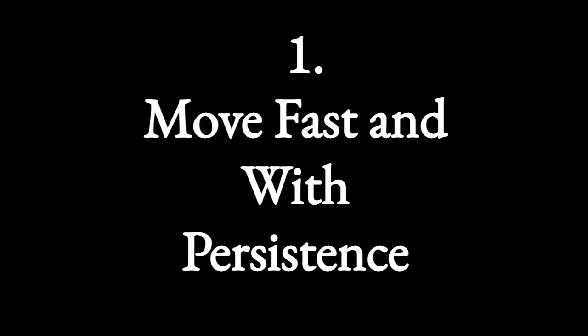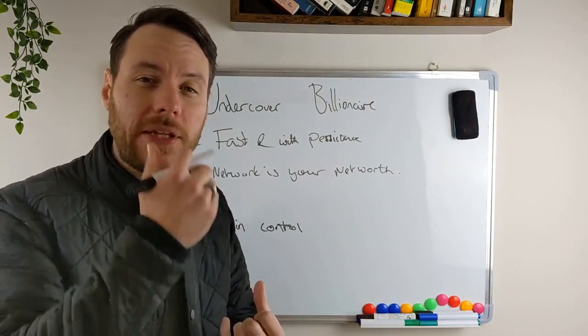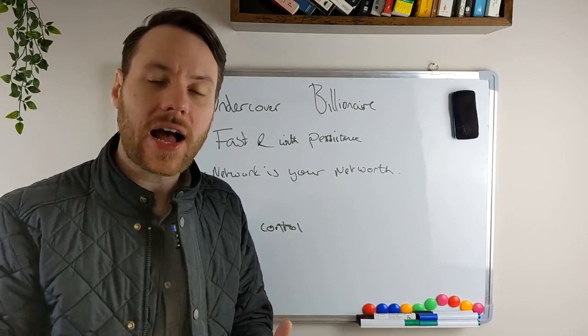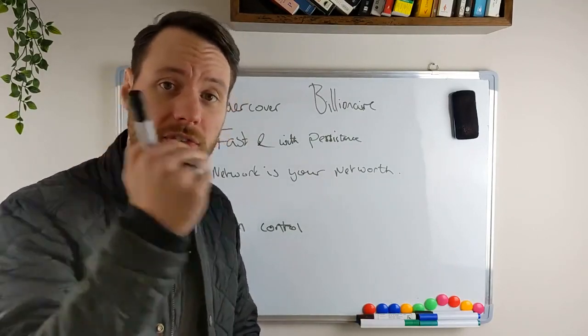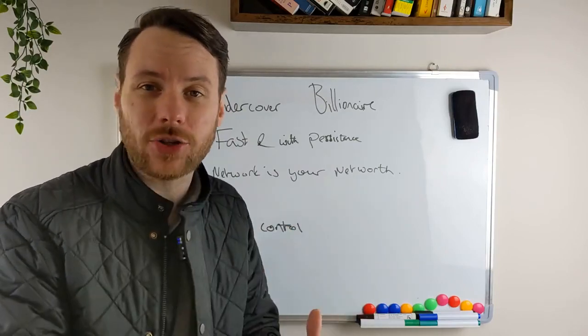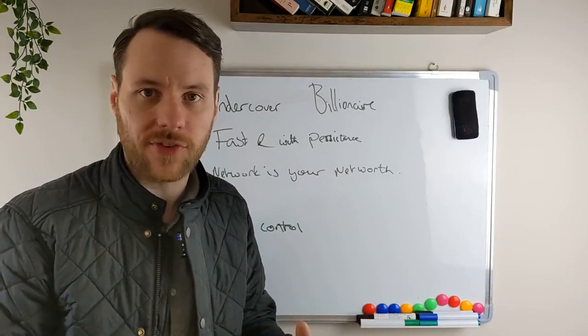Point number one: move fast and with persistence. This point is huge - all billionaires and people with wealth are incredibly decisive. These guys take calculated risks quickly and move fast to their destination with an action plan pretty much immediately as soon as they've got enough information.